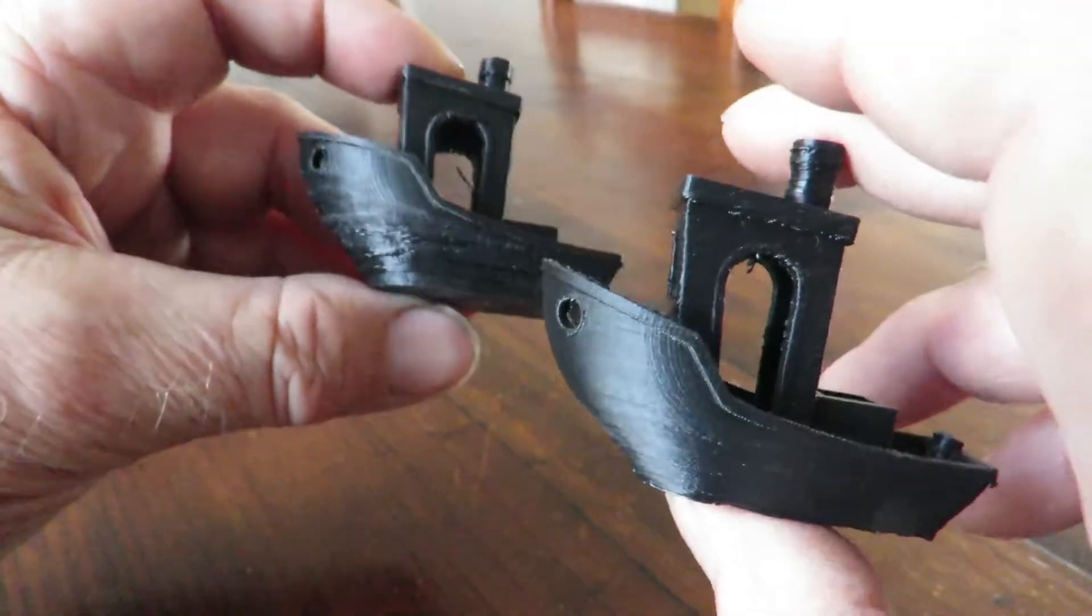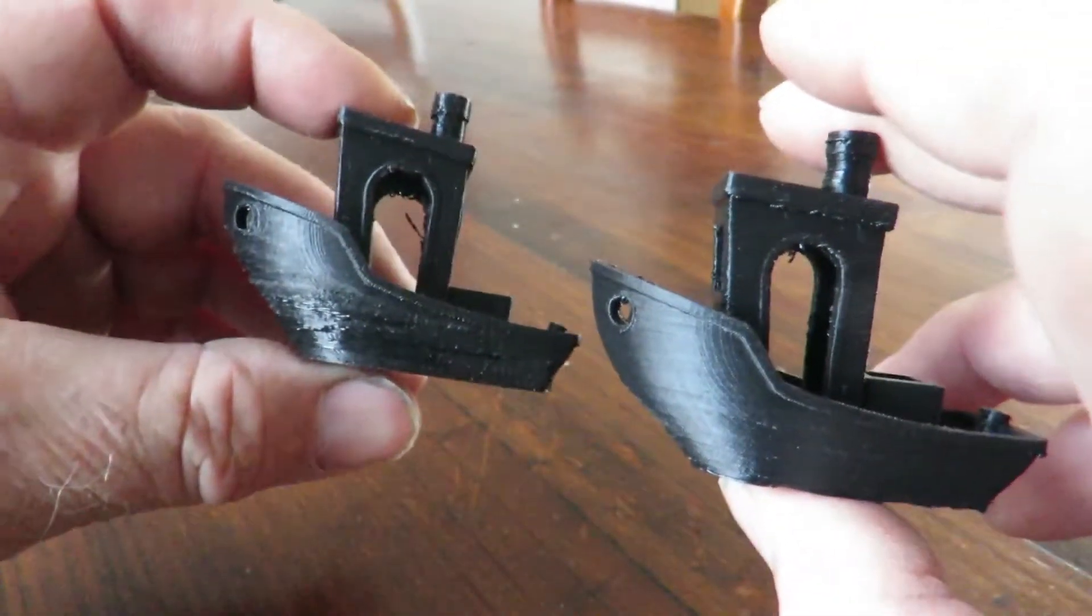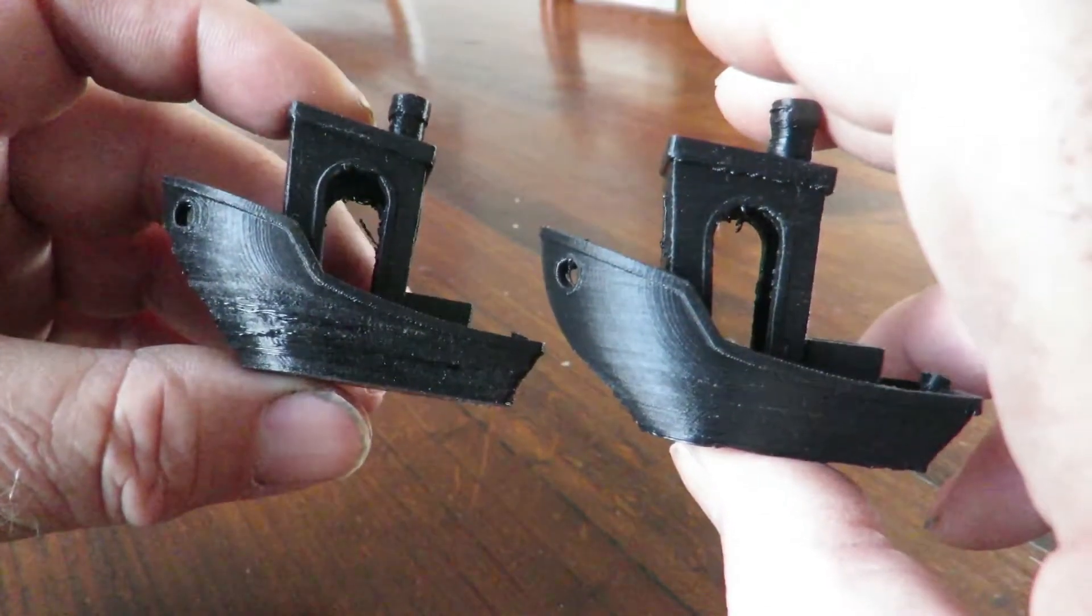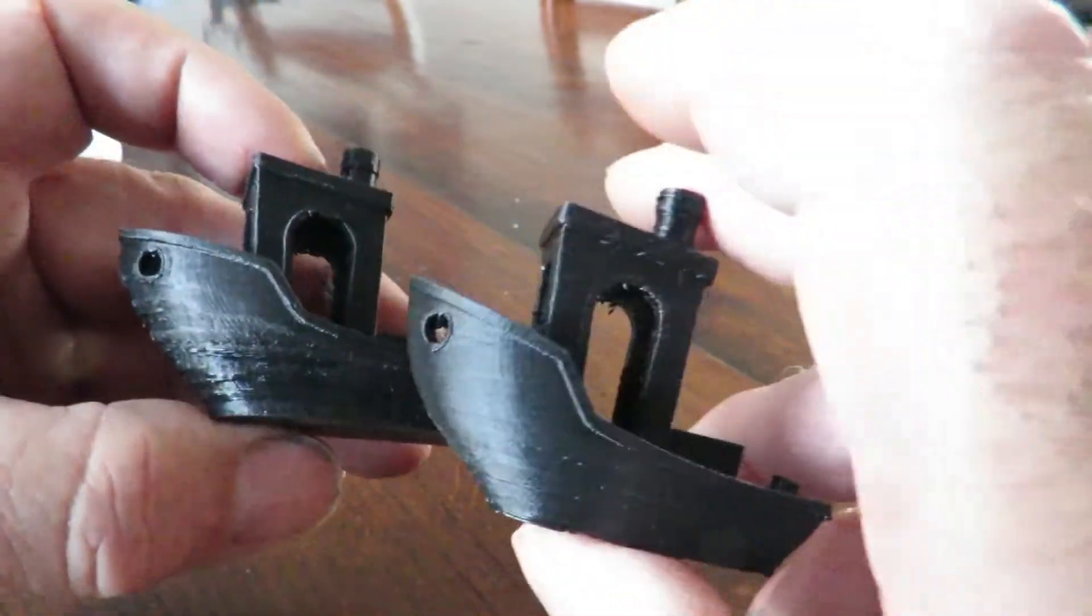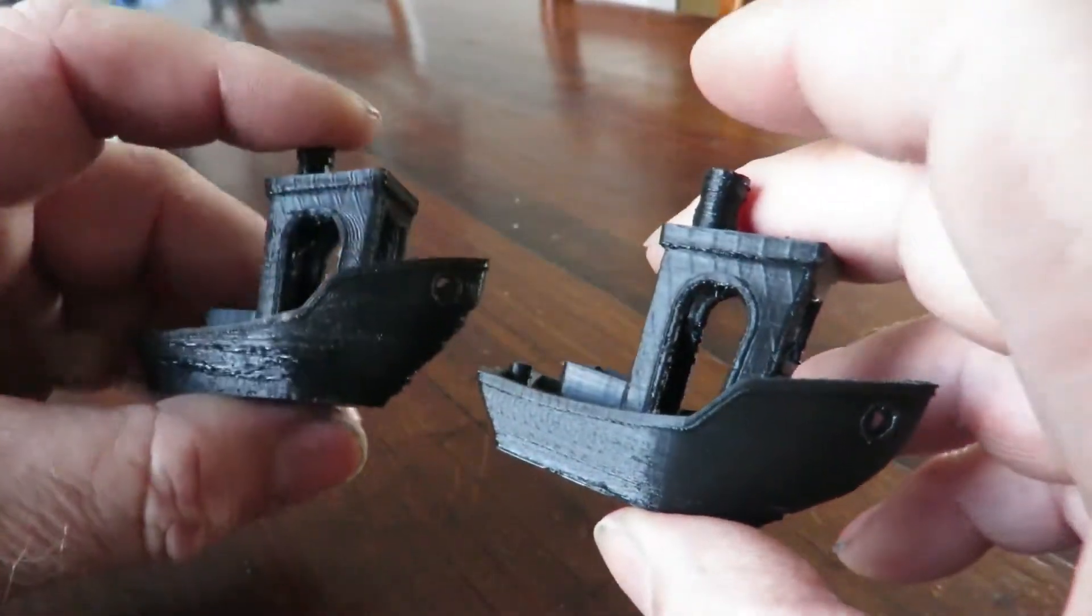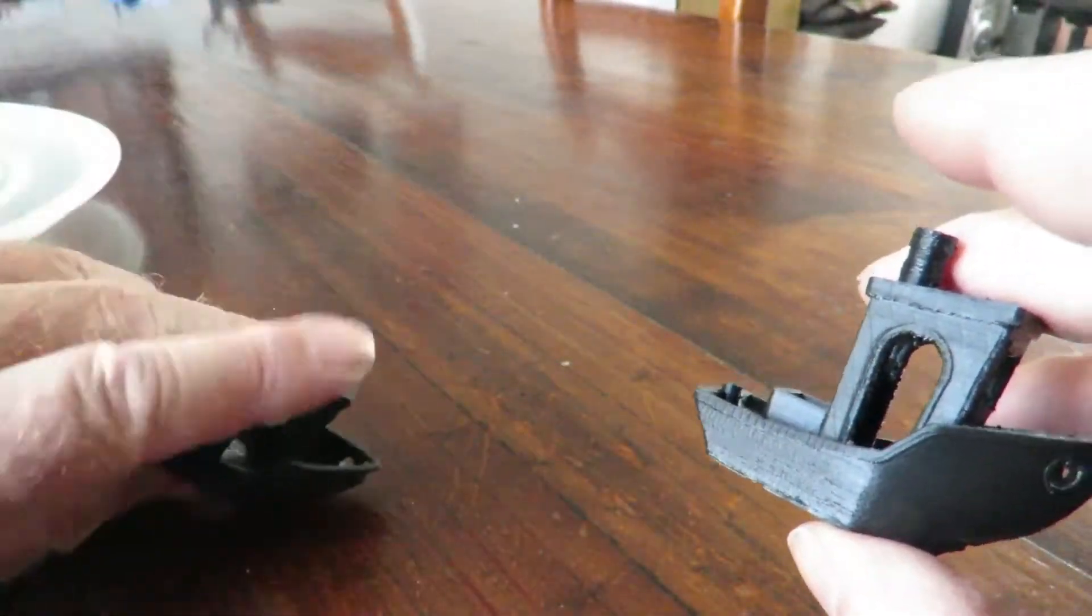As you can see, this top one was printed on a wobbly bed, bottom one was printed on the Y carriage, the new upgraded one that I've actually printed out. So I think you can see a bit of quality difference between the two of them. No mistaking this one versus this one.